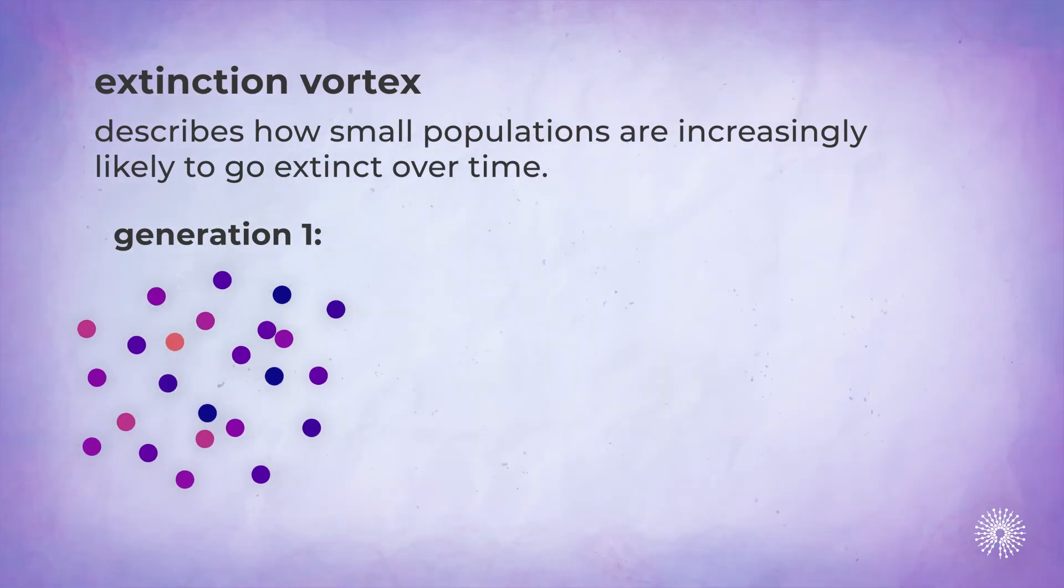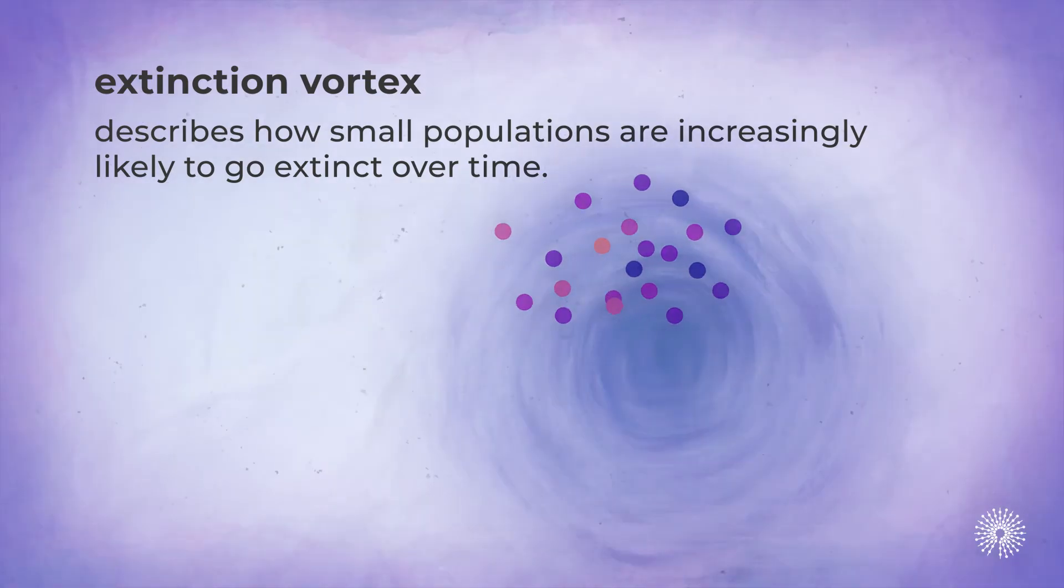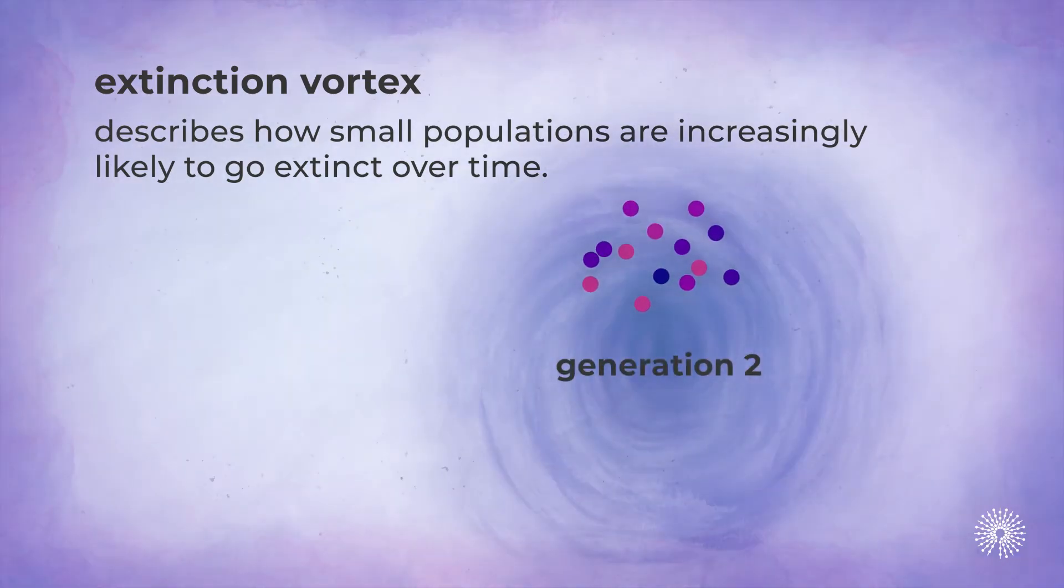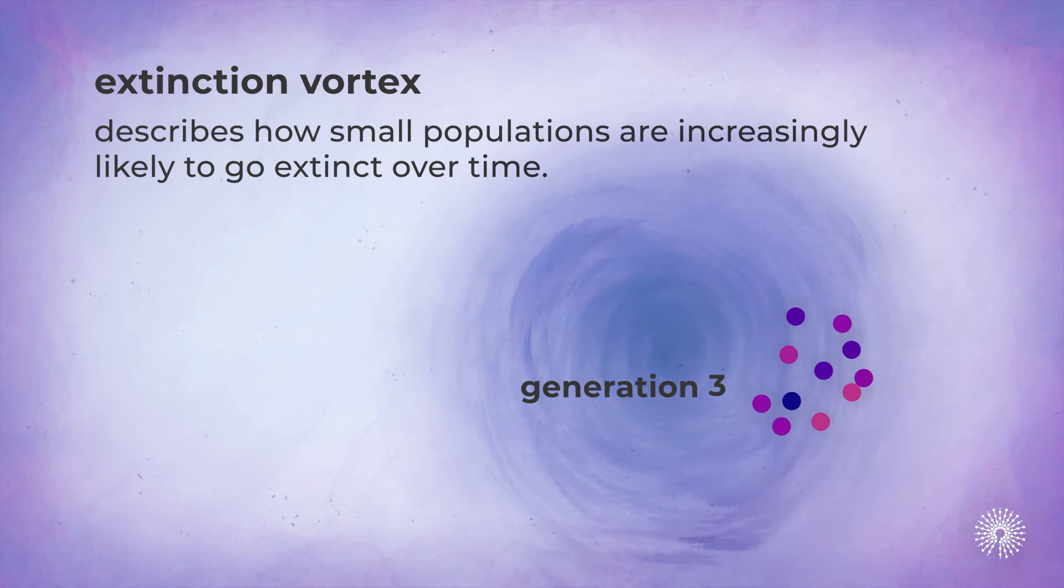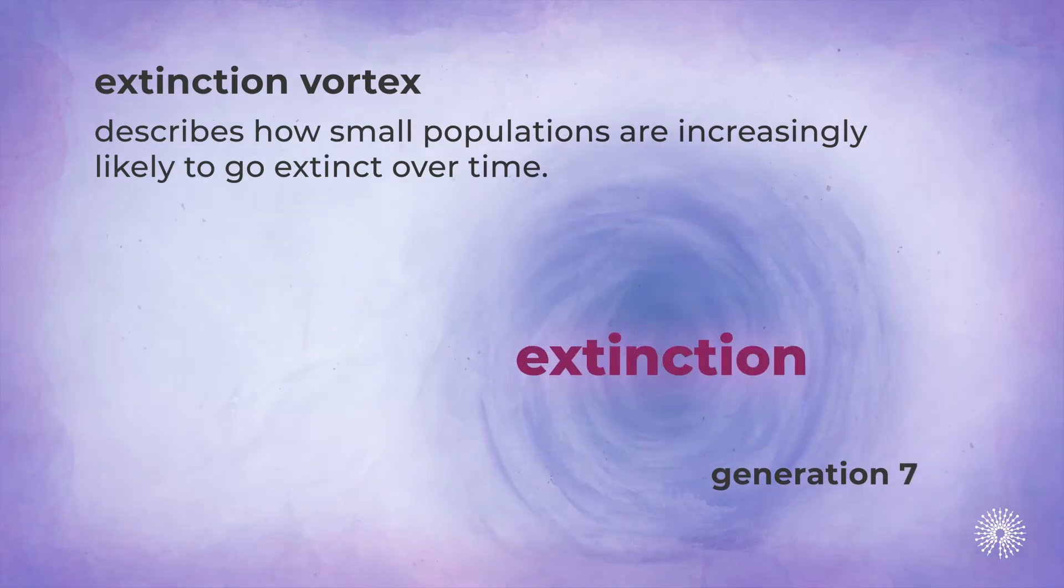In this small of a population, any random death has a big impact. And in inbred populations, selection against one set of genes can drastically reduce the population. As the population shrinks, the slide towards extinction accelerates seemingly unavoidably. This is what was happening to the Florida Panthers in the 1990s.